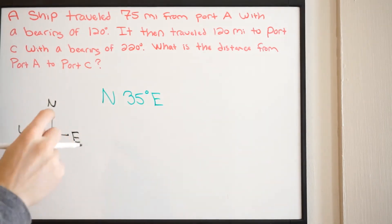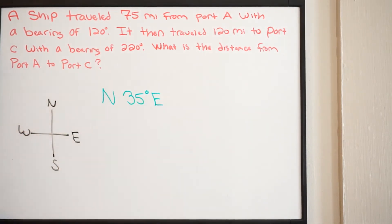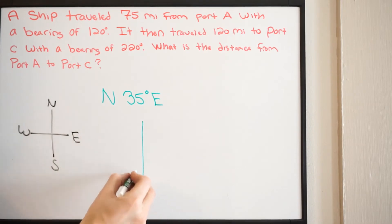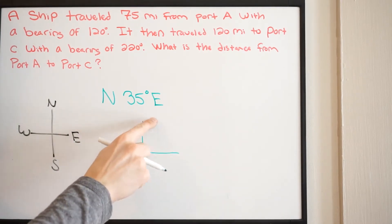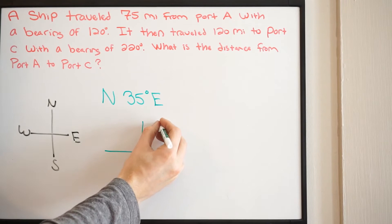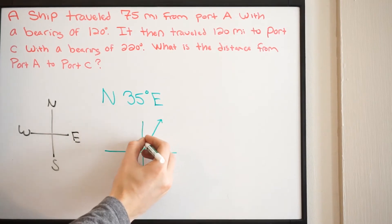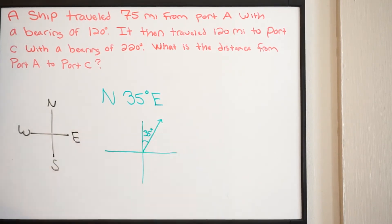That notation was telling us to go from north toward east, and our angle of rotation would be 35 degrees. To put that direction on a grid, going from north to east, we would have an angle of rotation of 35 degrees — that's how we were placing the direction.